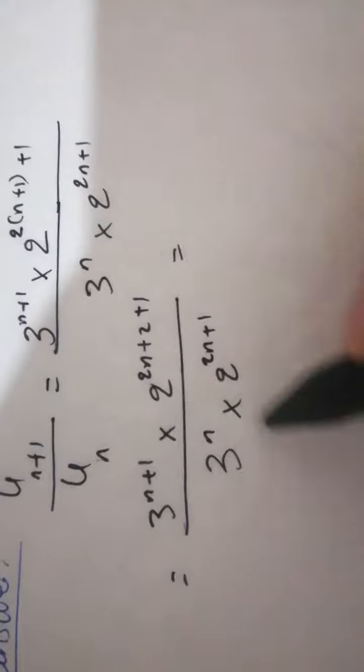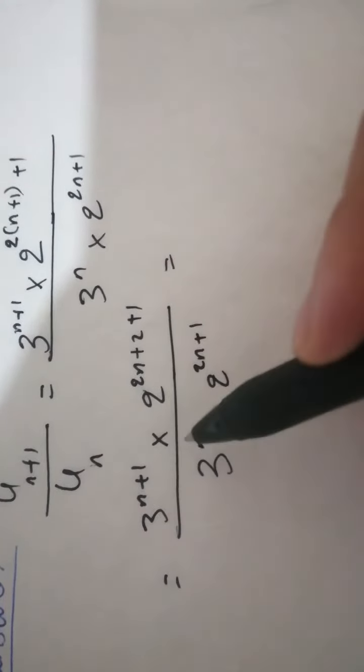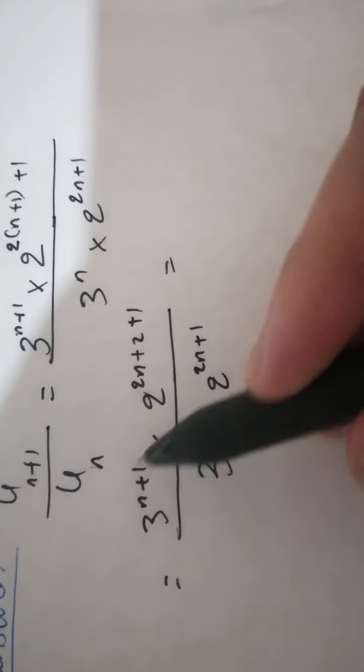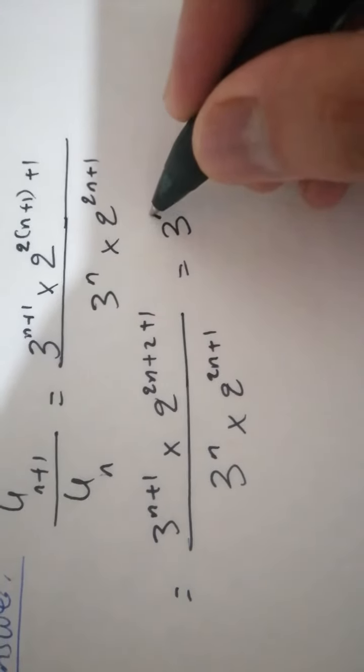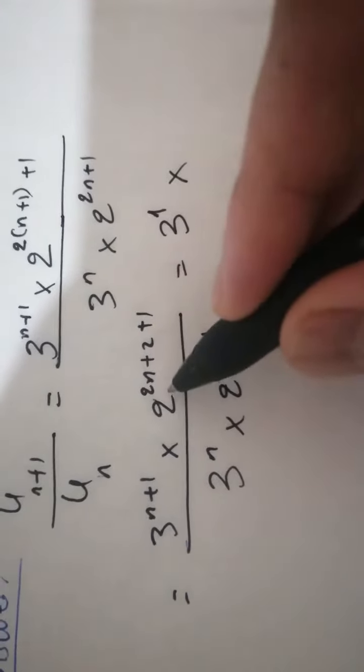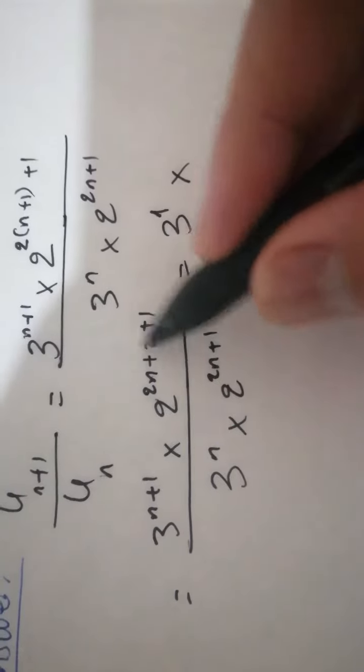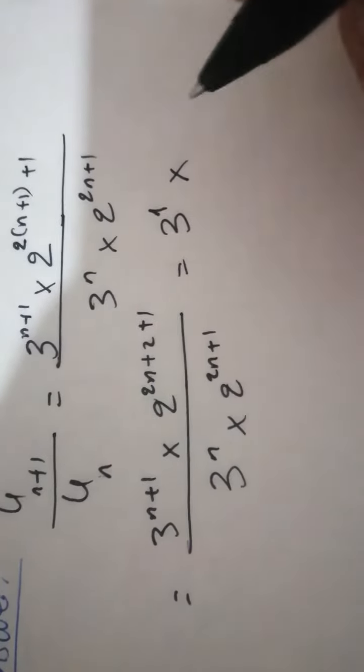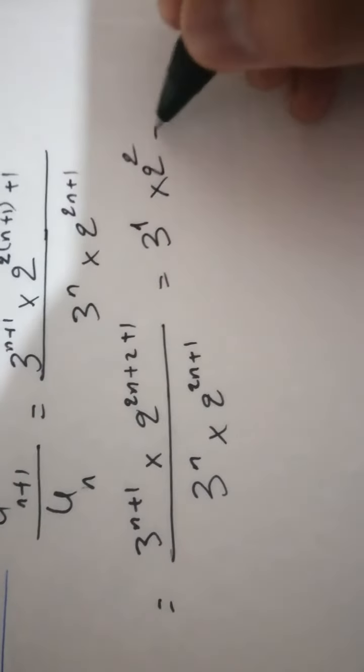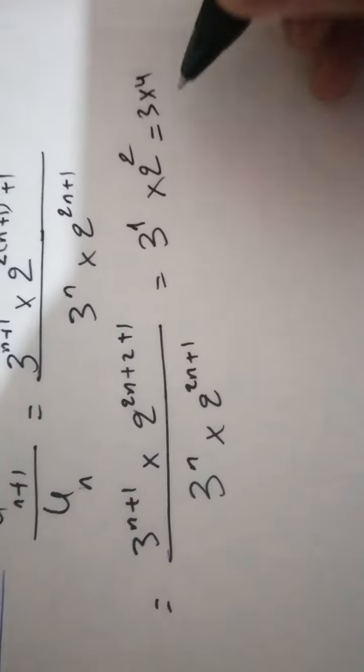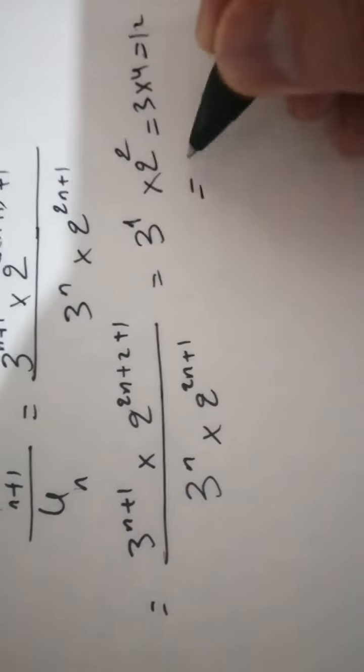3 power N plus 1 over 3 power N, we subtract the powers to get 3 power N plus 1 minus N, equal 3 power 1 times 2 power 2N plus 3 minus 2N minus 1, which is 2 power 2. This is 3 times 4 which is 12, which is constant.